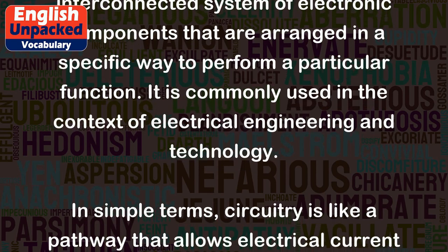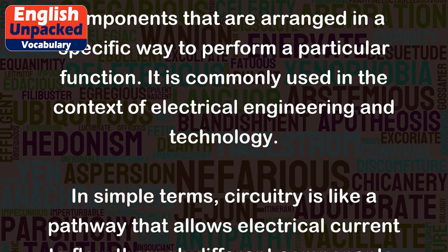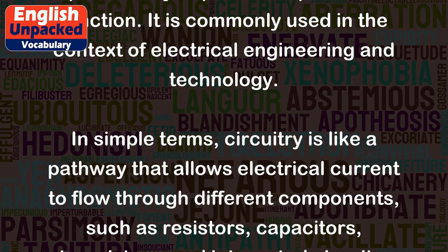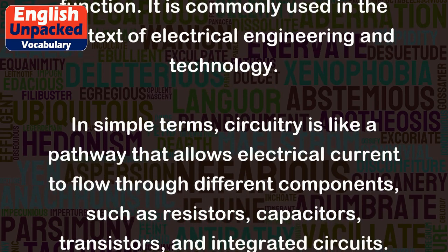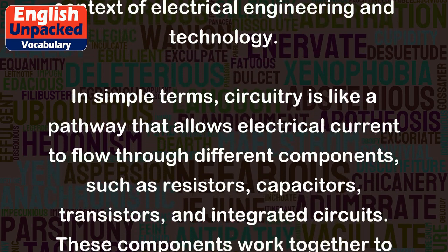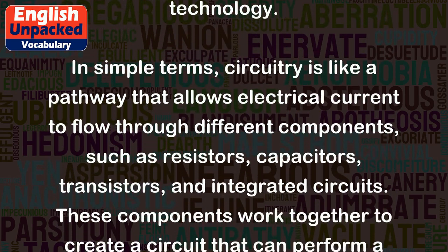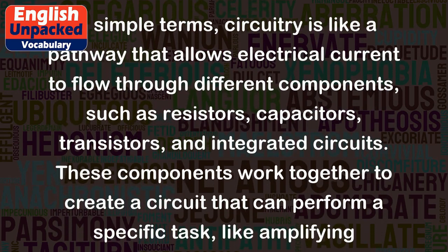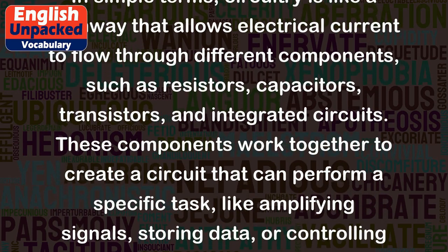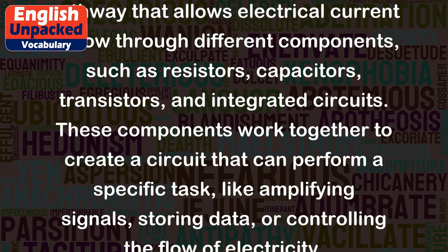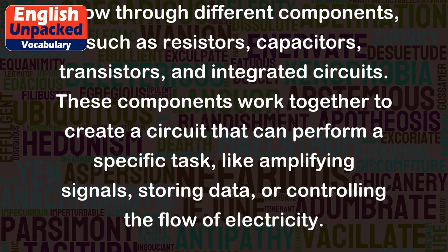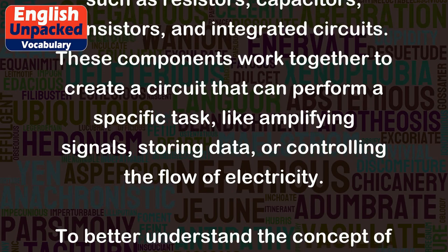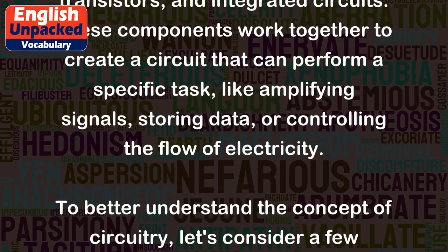In simple terms, circuitry is like a pathway that allows electrical current to flow through different components, such as resistors, capacitors, transistors, and integrated circuits. These components work together to create a circuit that can perform a specific task, like amplifying signals, storing data, or controlling the flow of electricity.